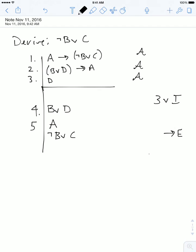And then line five is going to be A, which is going to be from line two and four by conditional elimination. And then line six is going to be not B or C from lines one and five by conditional elimination. And that's how you can work backwards and then forwards to complete a simple derivation.